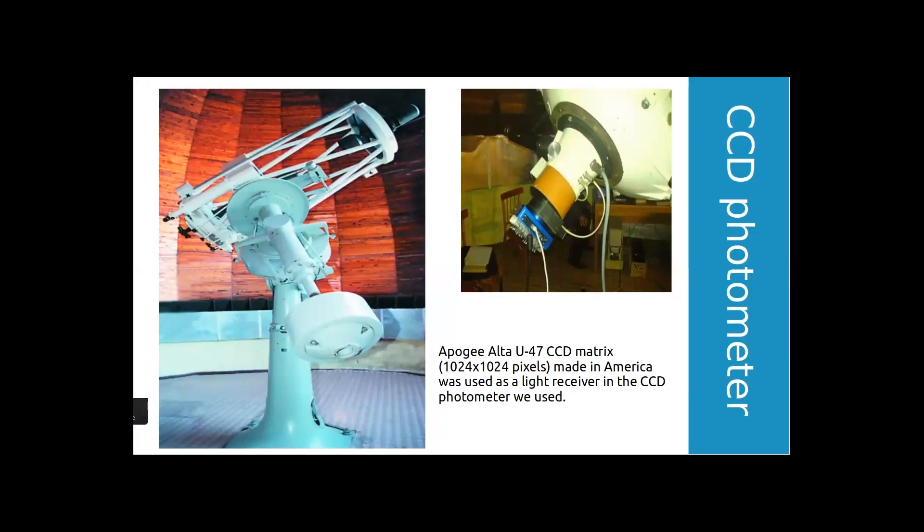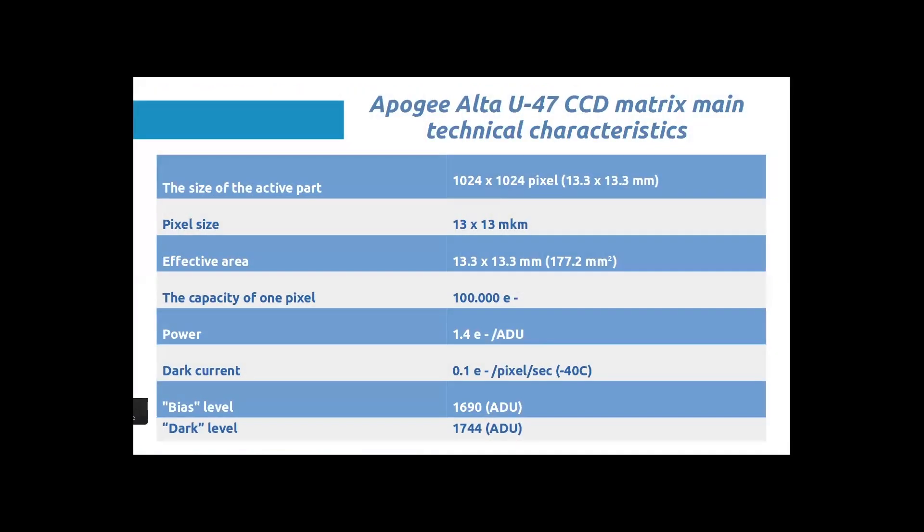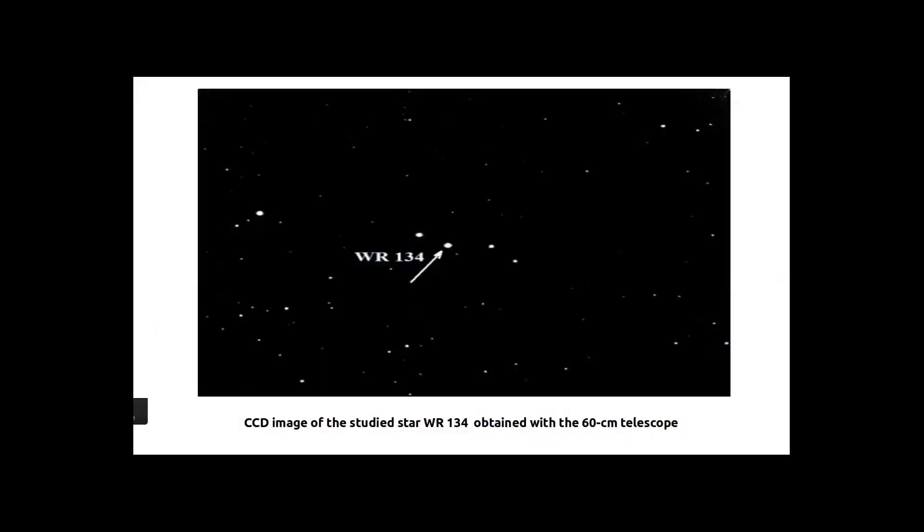We installed this CCD photometer during 2010. We carried out observations during July-November 2010 and July-September 2021. Here you see the CCD image of the star. We also obtained auxiliary images: dark, flat, and bias images. Without these images, it is not possible to process the obtained material.